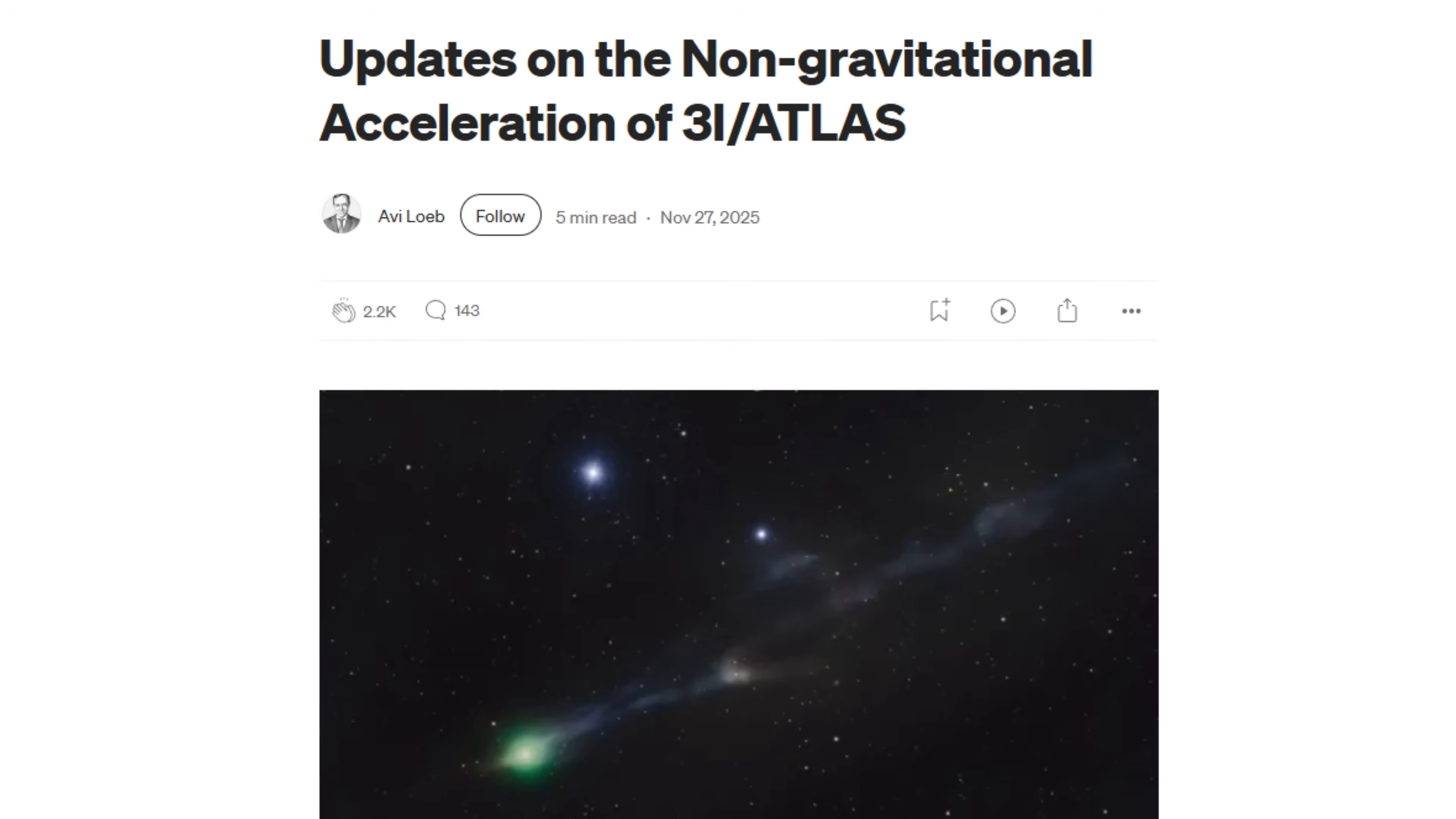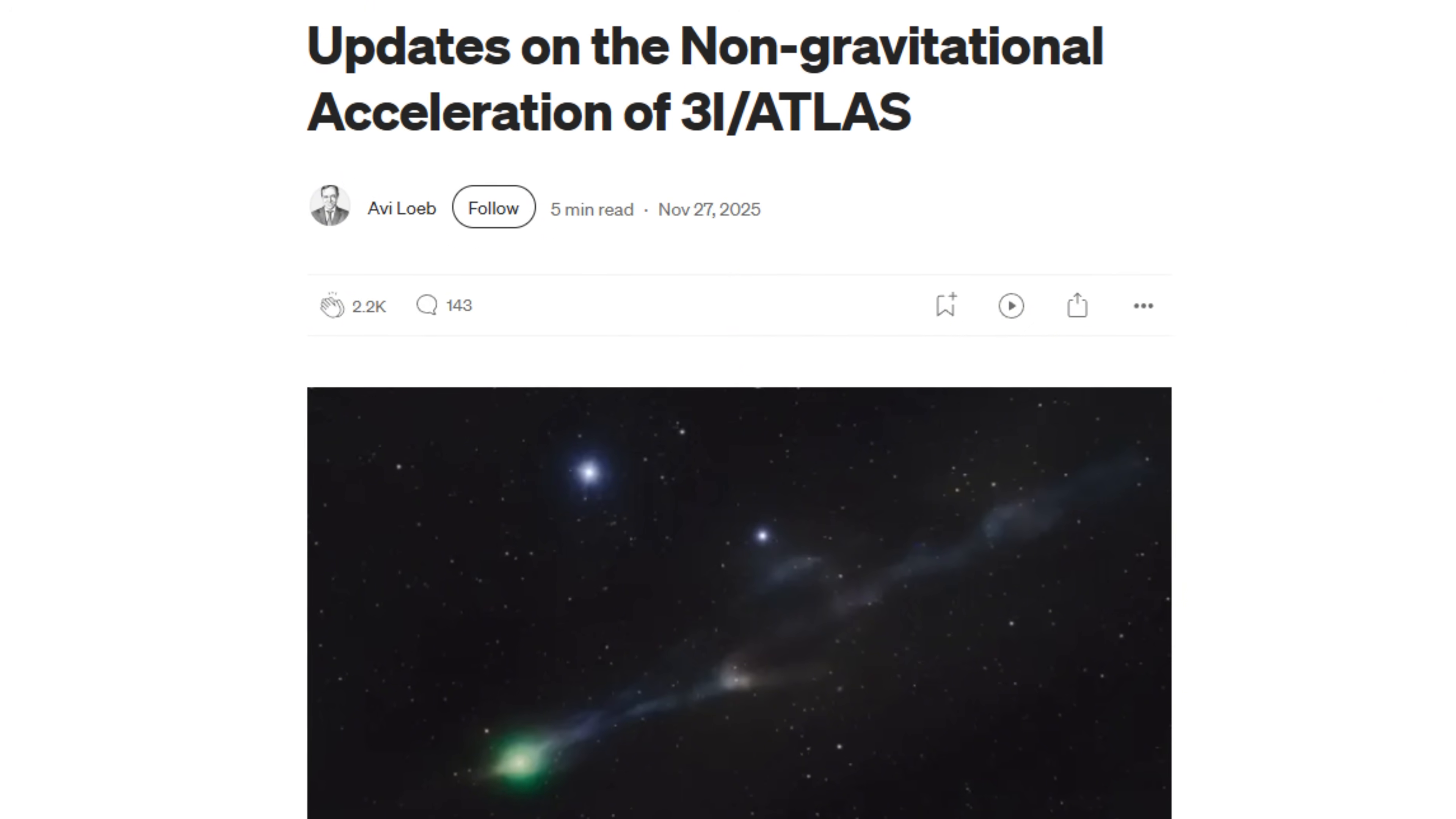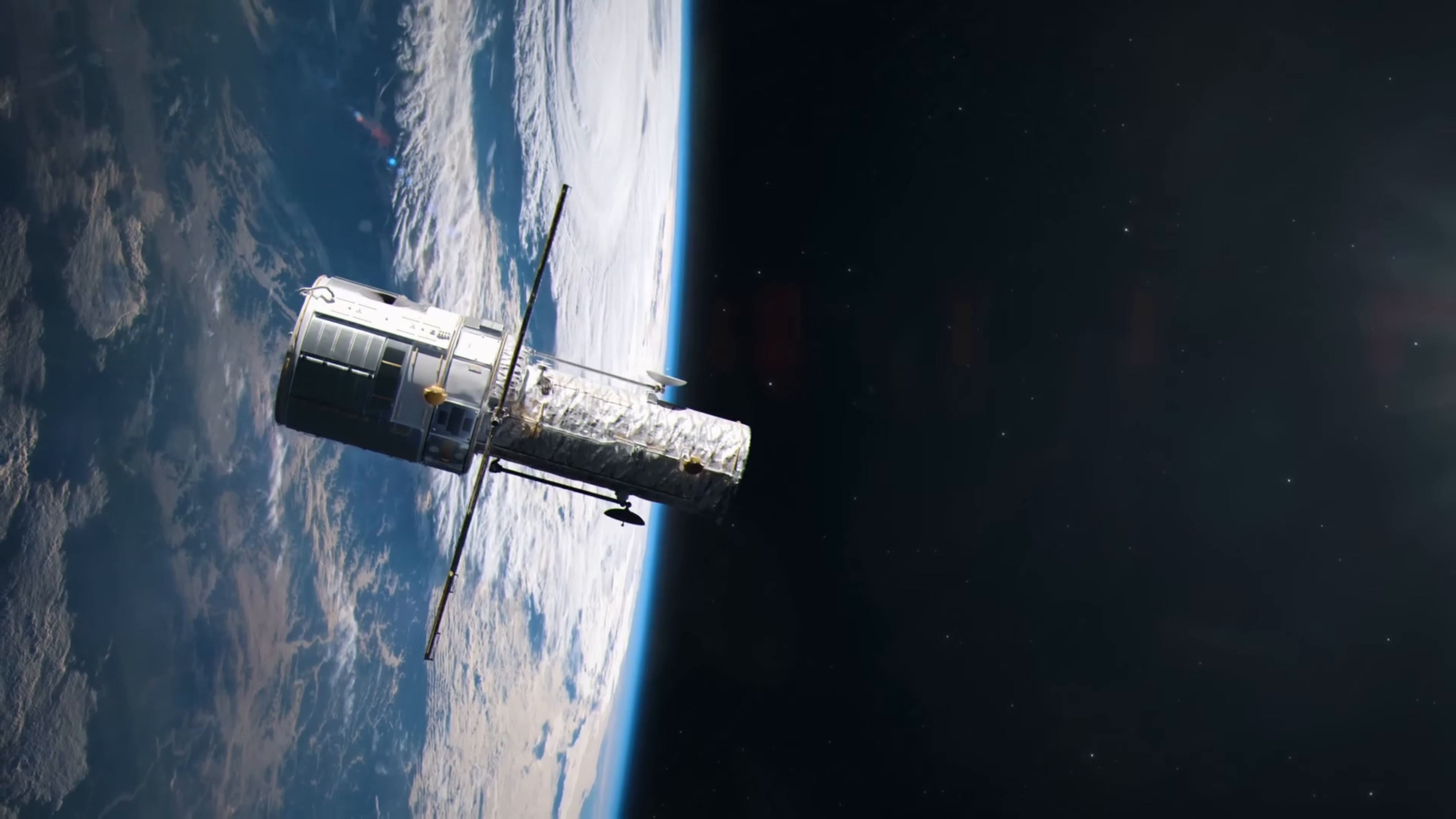Harvard astrophysicist Avi Loeb's earlier prediction of non-gravitational acceleration has become more difficult to dismiss in light of the new Hubble data. Loeb proposed that the comet may have shed a swarm of macroscopic objects, meter scale or larger, that drifted sunward as a result of this extra push.